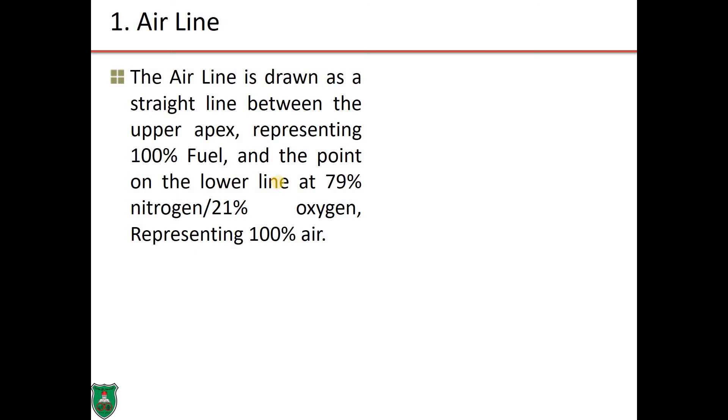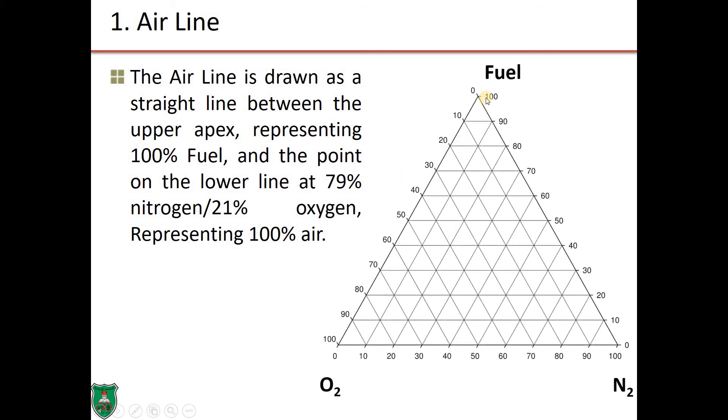We mentioned that the first point in the six-step procedure is to draw the airline. The airline is drawn as a straight line between the upper apex, representing 100% fuel, and the point on the lower line at 79% nitrogen or 21% oxygen, representing 100% air. So, we need to connect this point, that is, 100% fuel, with this point, representing normal air. And, if you remember, all you need is two points to draw a line. So, we draw this line here. We have 79% on this baseline, and 0% oxygen on this apex of the fuel.